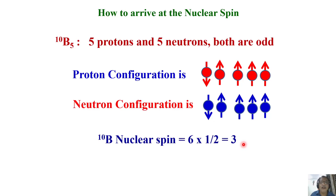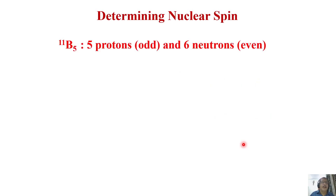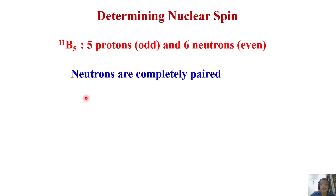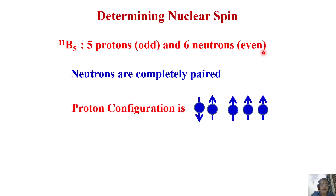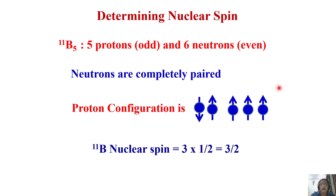Boron-11 is the other isotope of boron. There are five protons and six neutrons. The neutrons are completely paired since their number is even. The proton configuration we already saw: two are paired, three are unpaired. As far as neutrons are concerned they are completely paired, so there are three unpaired protons. As a consequence, Boron-11 has a nuclear spin of three times half, which is three by two.